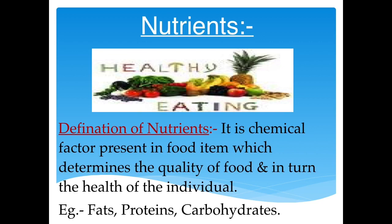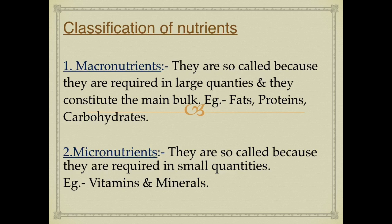Classification of nutrients: macro and micro. Macronutrients like fats, proteins, and carbohydrates are required in large quantities. Micronutrients like vitamins and minerals are required in small quantities.